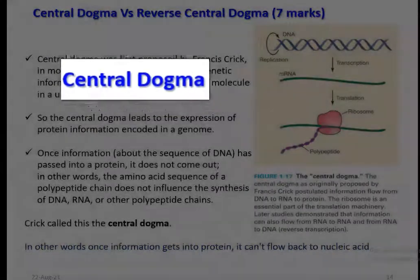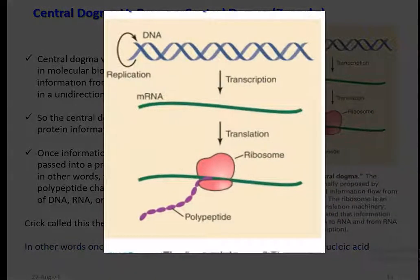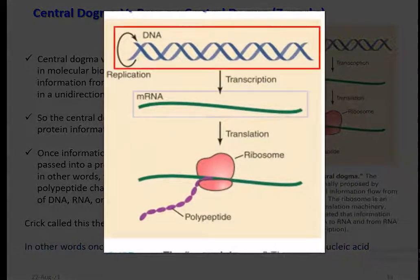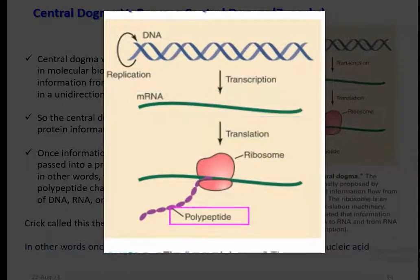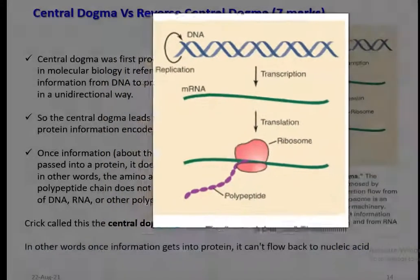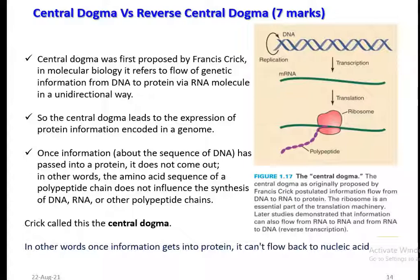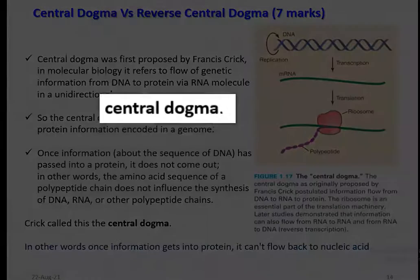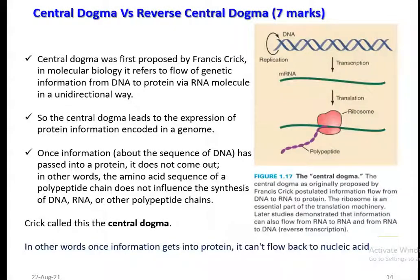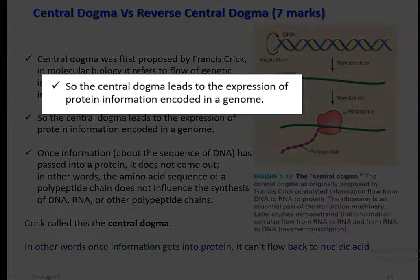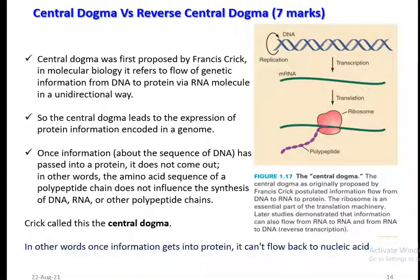First we will try to understand what is a Central Dogma. Look at the diagram on the right hand side. The genetic information is flowing from DNA to RNA and from RNA to protein, so it is a unidirectional flow of genetic information. This flow is referred to as Central Dogma. The Central Dogma was first proposed by Francis Crick in Molecular Biology, mainly to show the flow of genetic information from DNA to protein via an RNA molecule. Thus it leads to the expression of protein information that has been encoded in the genome.